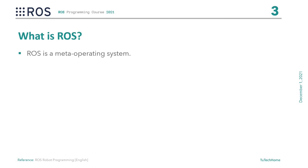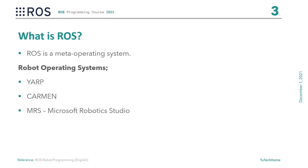ROS is a meta-operating system. It is very popular among robot developers because it is open source software and free to use. There are other robot operating systems like YARP, KAMON, and Microsoft's robot system, which are used to create robot applications, but we're not going to work on these operating systems.